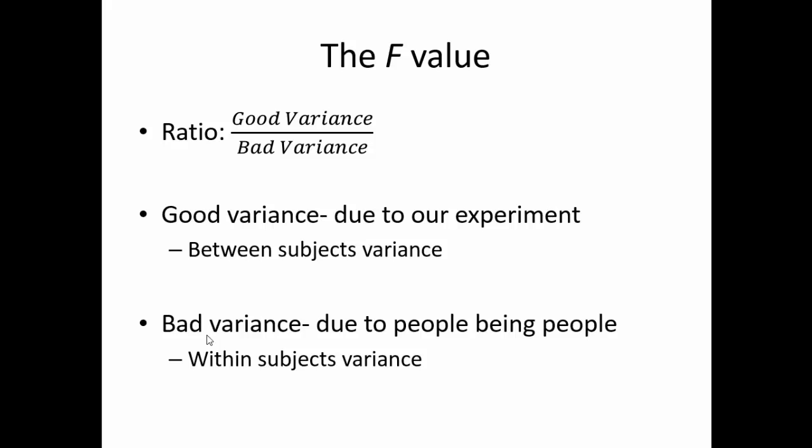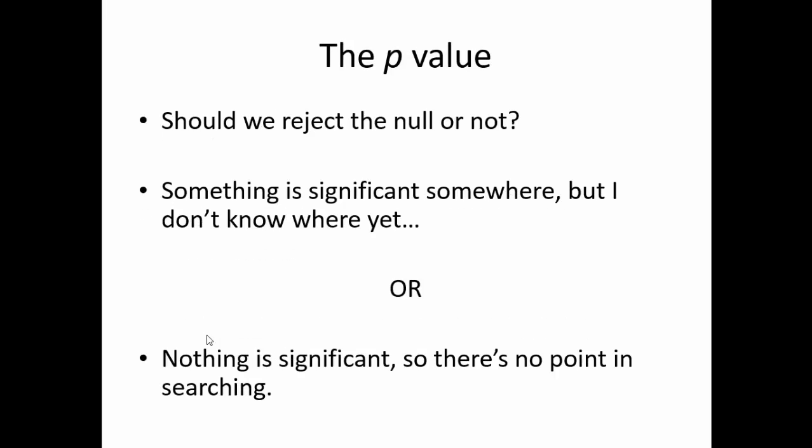When the f-value is high, we have a lot of good variance compared to bad variance, and chances are that our independent variable manipulation influenced scores based on our dependent variable changes. The ANOVA will also give the p-value, which indicates that the null hypothesis should be rejected or not. Since I determined that my p-value needs to be less than 0.05, and in this case it was less than 0.001, some mean somewhere is significantly different from some other mean somewhere. As of right now, I have no idea where, but it's in there, and it's worth looking at those post-hoc tests later.